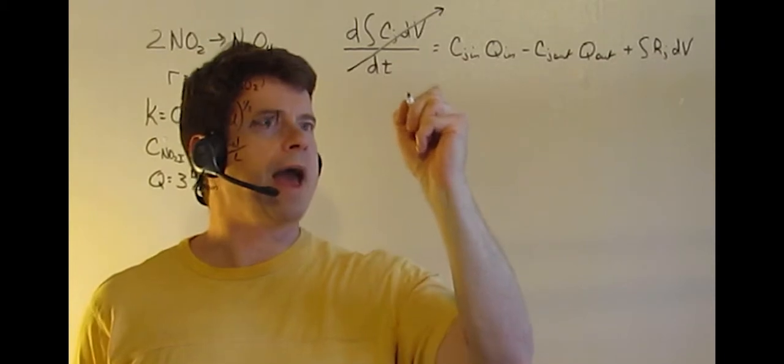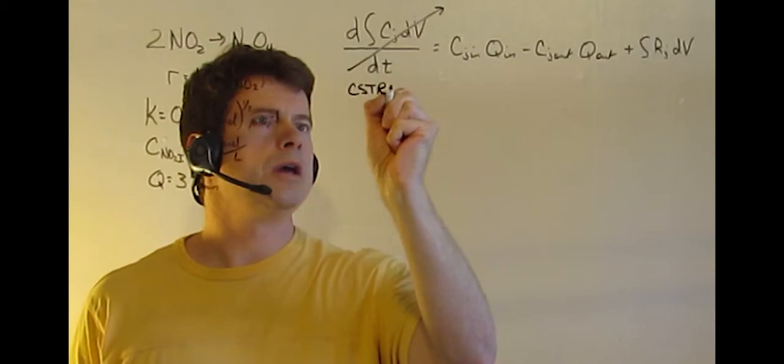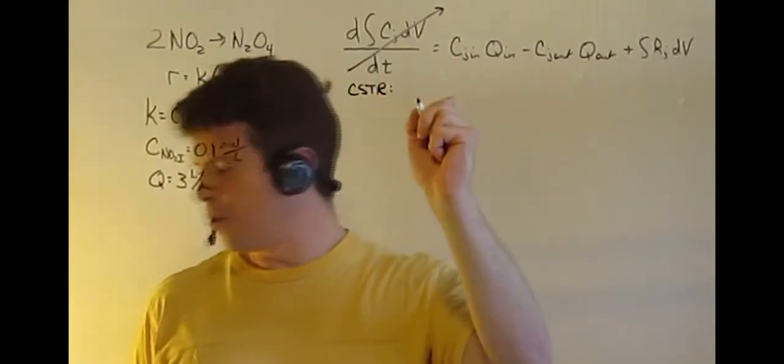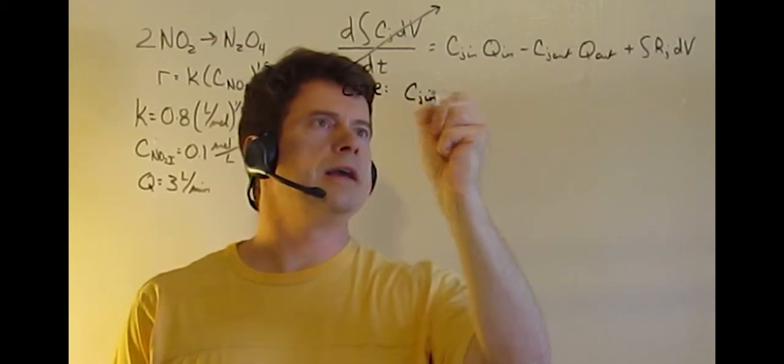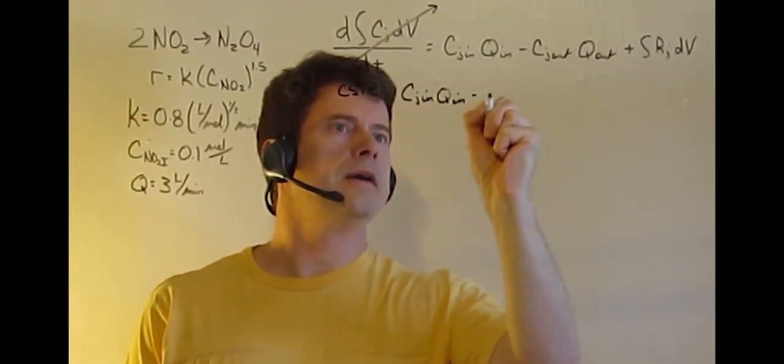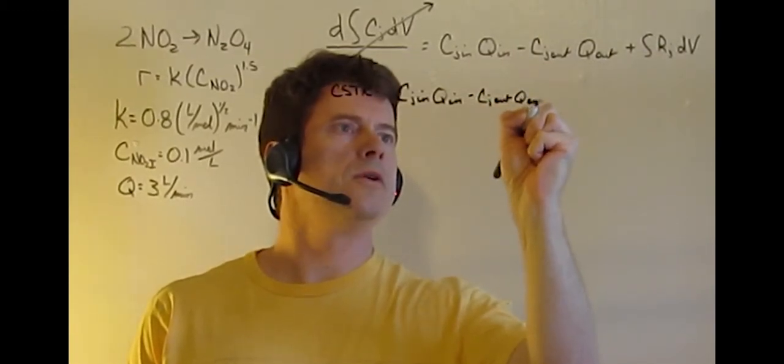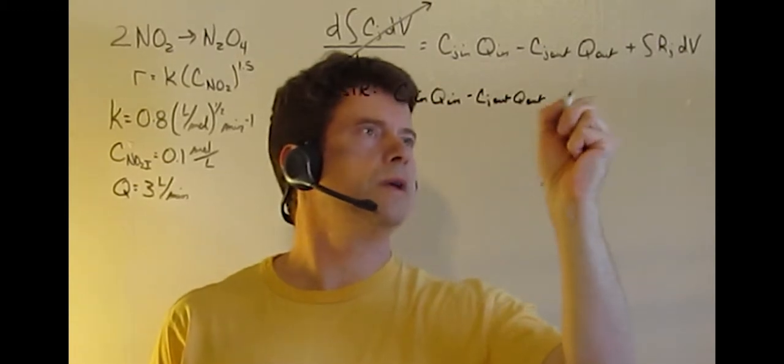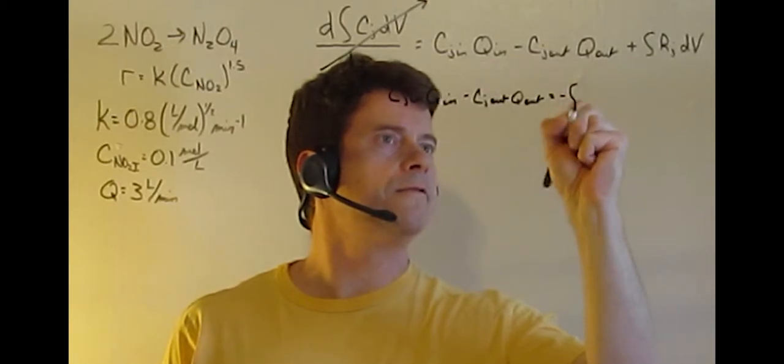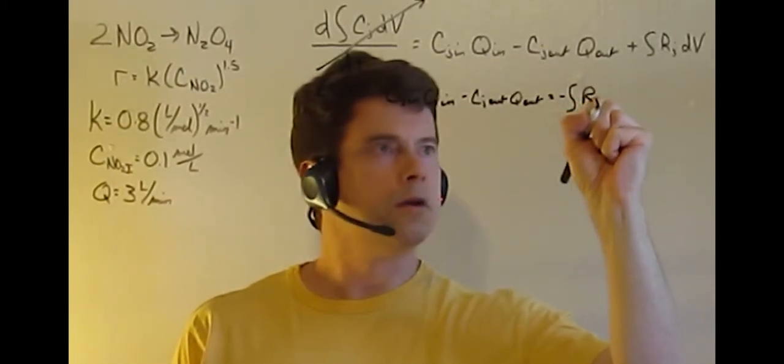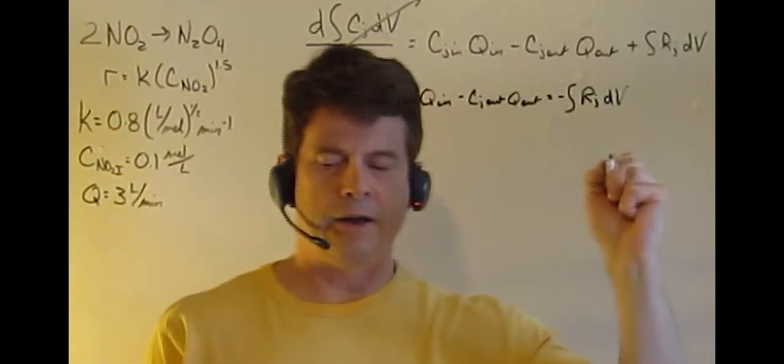First, looking at the equation required for a CSTR, this is going to be rather straightforward algebra. We'll take Cj in times Q in minus Cj out Q out, treating Q in and Q out as equal to each other, and set this equal to negative the integral Rj dV.